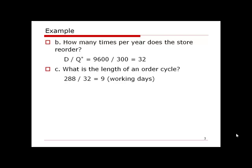For this problem, the distributor operates 288 working days per year and needs to place 32 orders. So we use 288 divided by 32 to get 9 working days per order cycle. Note this is working days, not calendar days — for calendar days we would use 365 divided by 32.